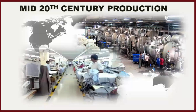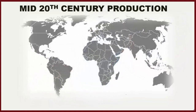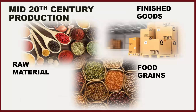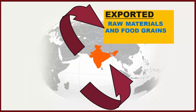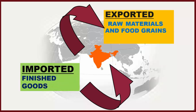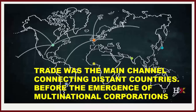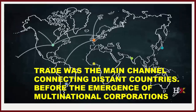Until the middle of the 20th century, production was largely organized within countries. Raw materials, food grains, and finished products only crossed the boundaries of these countries. India at that time was a colonial country — it exported raw materials and food grains and imported finished goods. Trade was the main channel connecting distant countries before the emergence of multinational corporations.